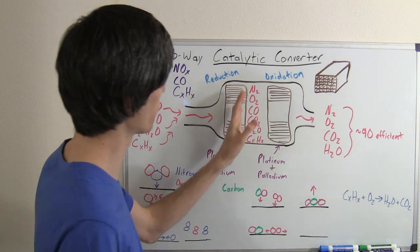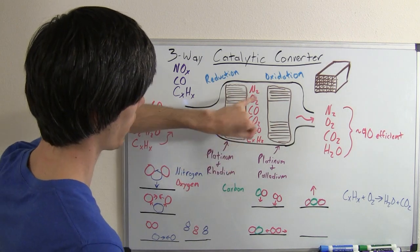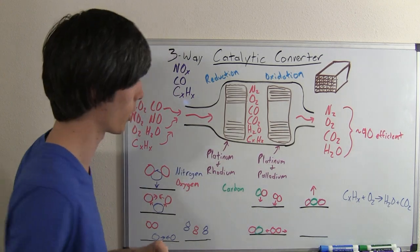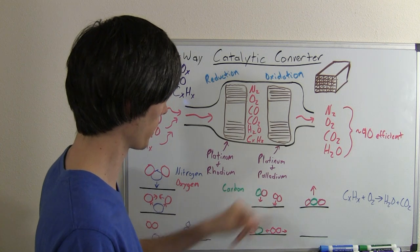So then after you've gone through the first step, we've eliminated NO2 and NO, and so now we just have N2, O2, CO, CO2, H2O, and our hydrocarbons. So the next step is this oxidation catalyst, which is made of platinum and palladium.